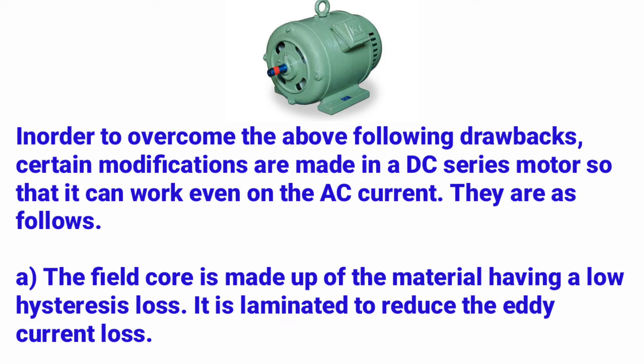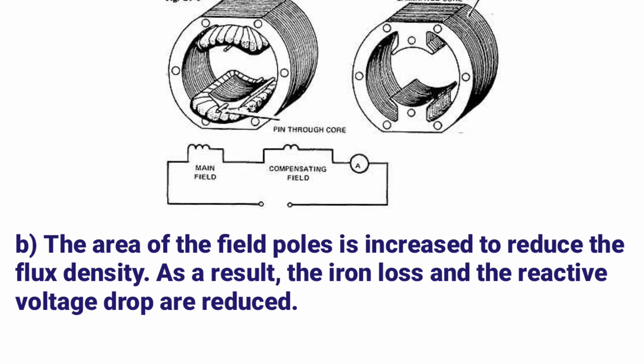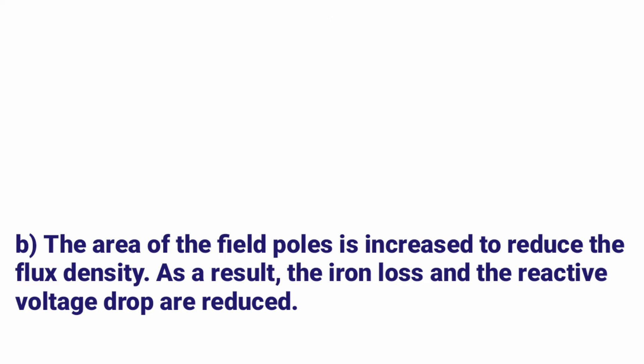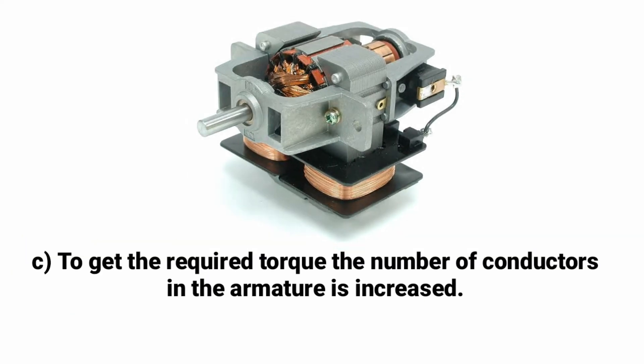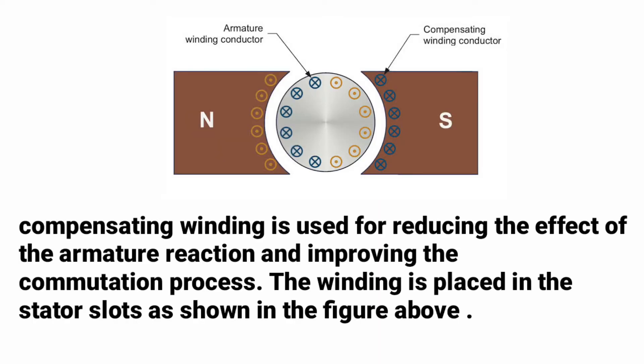To overcome these drawbacks, the DC series motor is modified to work on AC current as follows. First, the field core is made of material having low hysteresis losses and is laminated to reduce eddy current losses. Second, the area of the field pole is increased to reduce flux density, which reduces iron losses and reactive voltage drops. Third, the number of conductors in the armature is increased to obtain the required torque, since the starting torque is high for the universal motor.